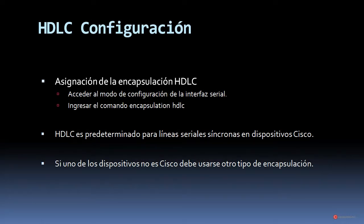Finalizamos la parte teórica con el comando de configuración HDLC, con el que podemos implementar y recuperar ese protocolo de encapsulación en nuestros dispositivos Cisco. Accedemos al modo de configuración de la interfaz con enable, configure terminal, interface serial y el número de interfaz. A continuación ingresamos el comando encapsulation hdlc. Por defecto ya está ese protocolo funcionando; en caso de que lo hayamos cambiado, por ejemplo por PPP o Frame Relay, lo podemos recuperar a través de ese encapsulation hdlc.